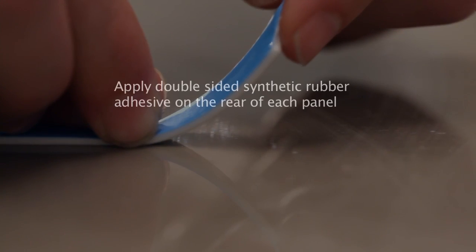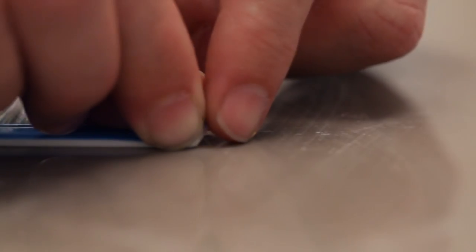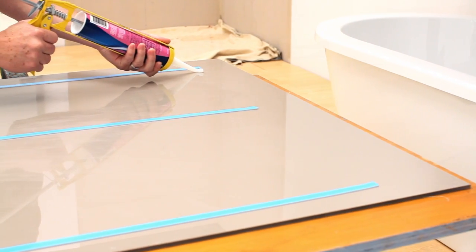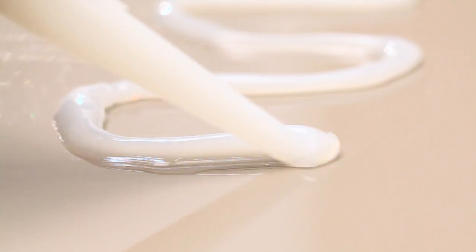Apply strips of double-sided tape to the length of the rear surface of each panel at approximately 300mm spacing. Apply a 6mm bead of translucent neutral cure silicone in a wavy pattern between each tape strip near the edges of the panel.